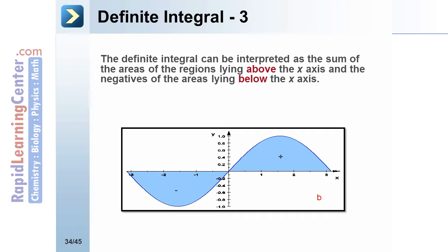The definite integral can be interpreted as the sum of the areas of the regions lying above the x-axis and the negatives of the areas lying below the x-axis.